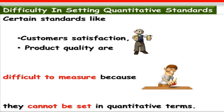Why is it difficult to set quantitative standards? If I tell you to do 100 emails but on Monday you could only do 60 because too many calls were coming in, or you could only do 80 or 90 because someone in your team was absent — the standard is set on a quantity basis, not quality. Certain standards like customer satisfaction and product quality are difficult to measure because they cannot be set in quantitative terms.